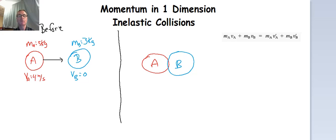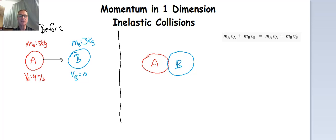A totally inelastic collision is one where two objects collide together and they stick together — they do not bounce off of each other in any way. We have object A and object B, and they come together, they collide, and they stick together. It could be clay, it could be two train cars colliding and coupling together. We only deal in totally elastic collisions and totally inelastic collisions in a beginning physics course. Later on, if you take subsequent physics courses, we can have combinations of both. So inelastic is where they stick together.